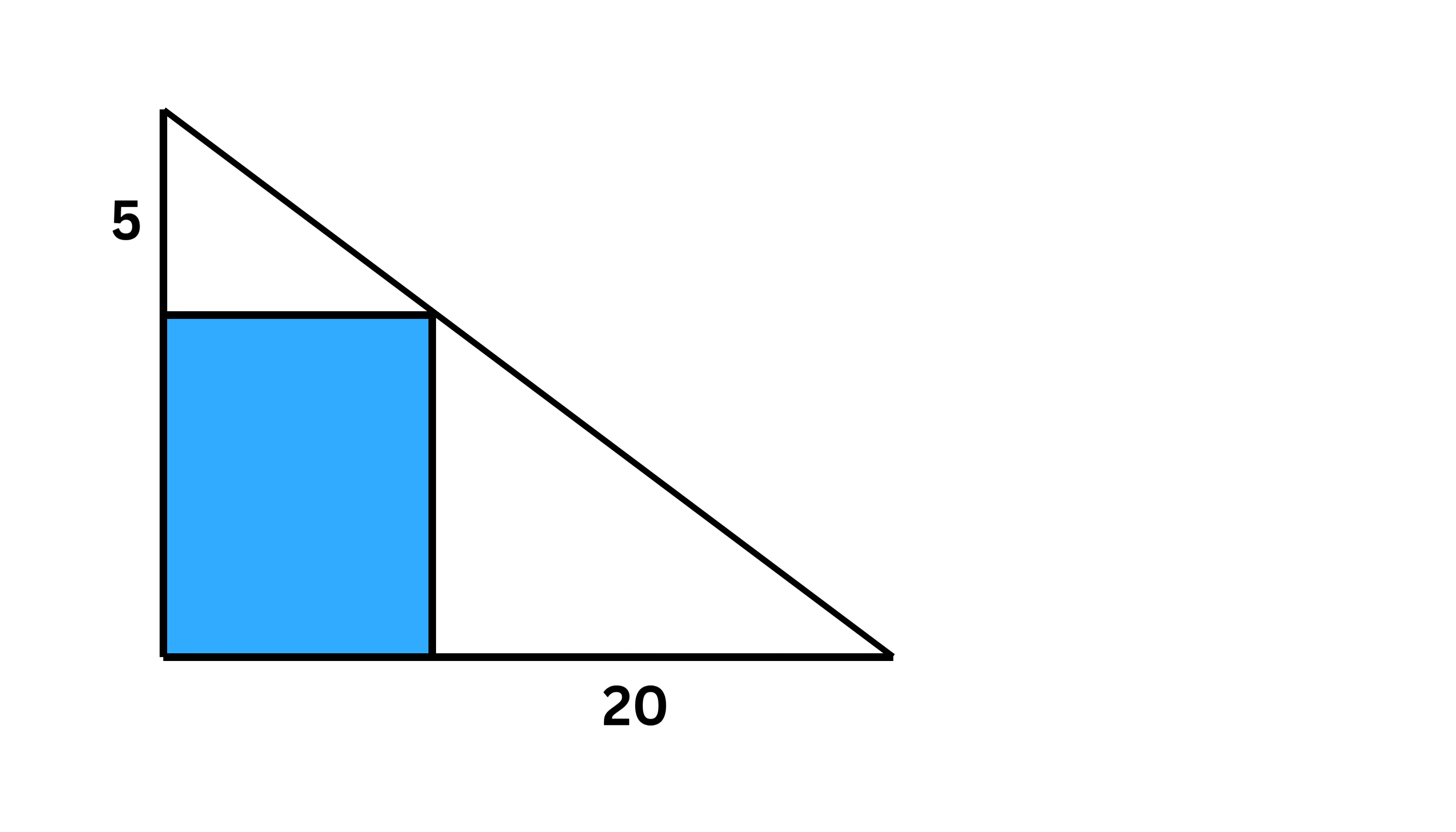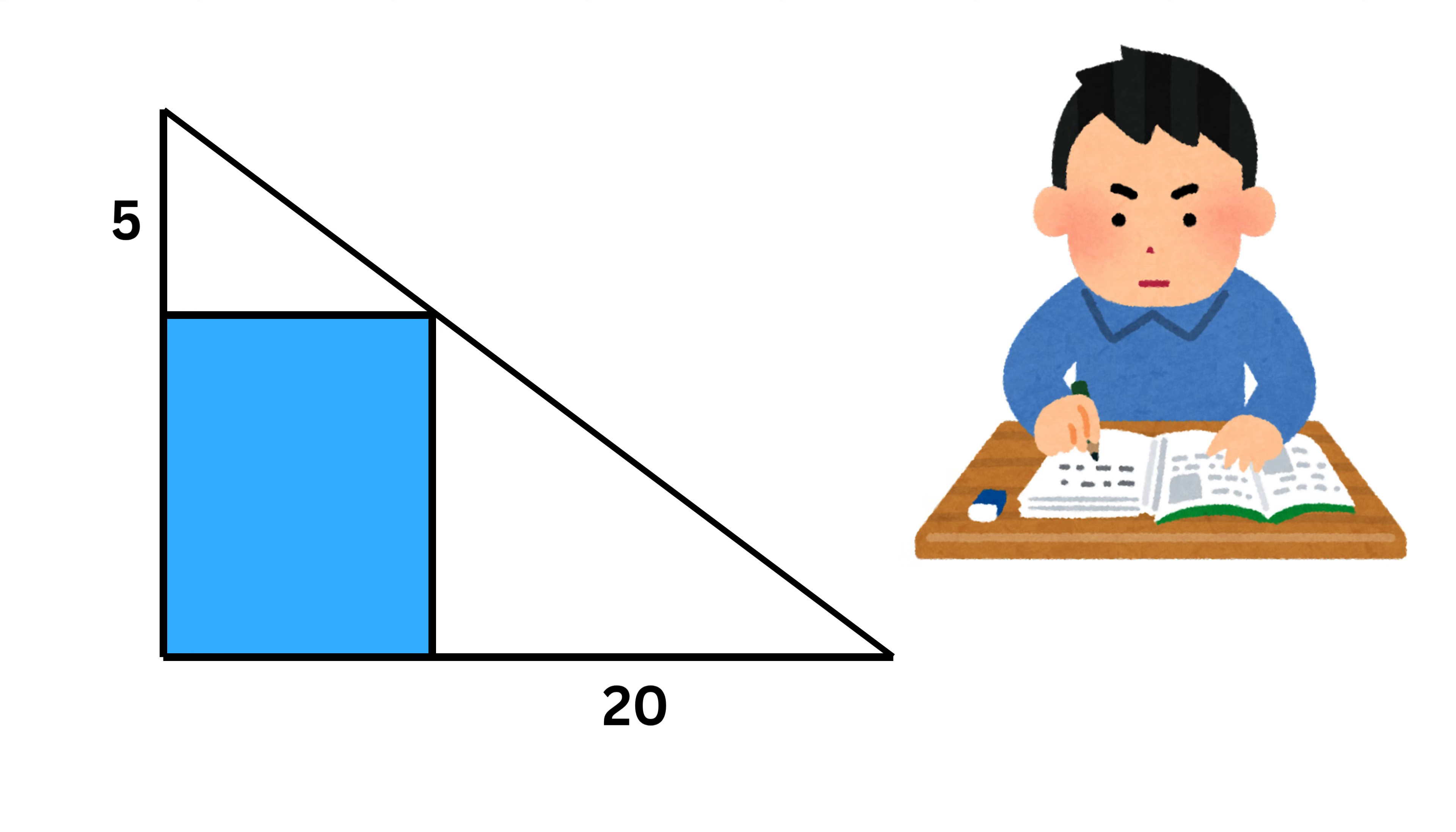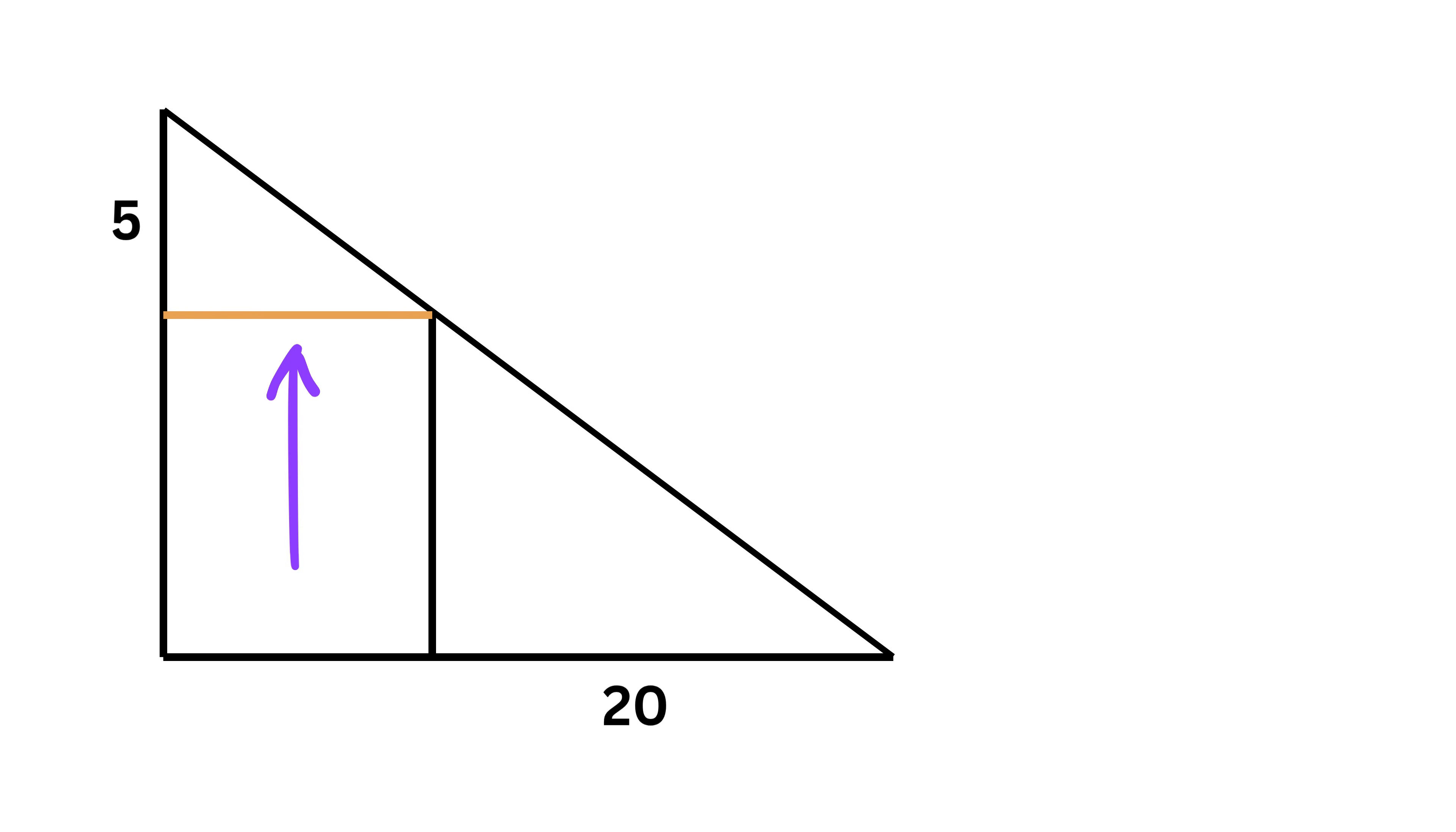Using only this much information we need to find the area of this blue shaded region. Before I reveal the trick, let's first solve this using the common method that most people follow. Assume this side of the rectangle is of length x and this side is of length y, so the area of this rectangle will be equal to x times y.